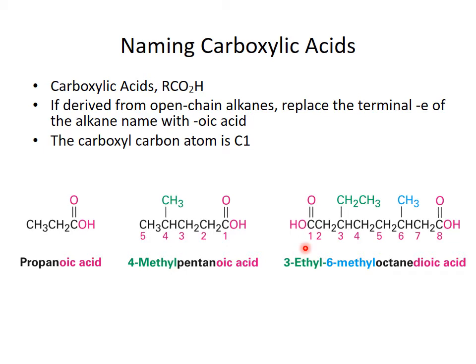We don't have to number the functional group because it's always going to be on a number one or the tail end of the compound in the case of a dioic acid. Now we number and identify the substituents. We have a methyl and an ethyl — it's either three or six, or six or three. When they're equal, we give the lowest number to the substituent that comes first in alphabetical order. So it's 3-ethyl-6-methyloctanedioic acid.